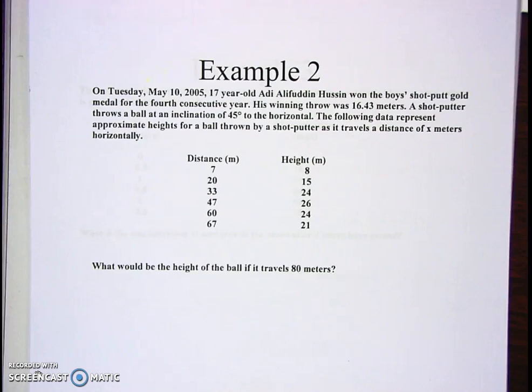won the boys' shot putt gold medal for the fourth consecutive year. His winning throw was 16.43 meters. A shot putter throws a ball at an inclination of 45 degrees to the horizontal. The following data represents approximate heights for a ball thrown by a shot putter as it travels a distance of X meters horizontally.